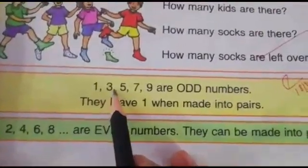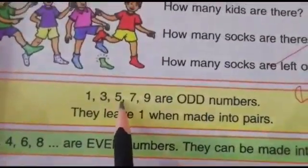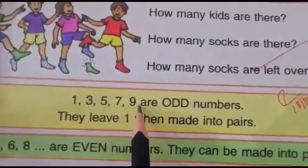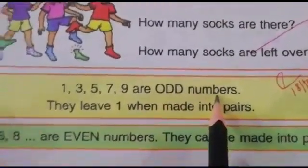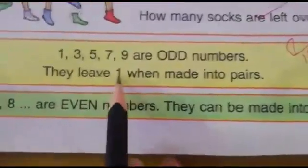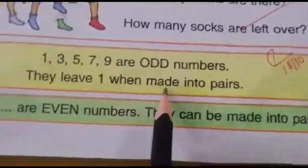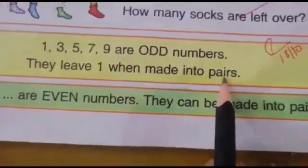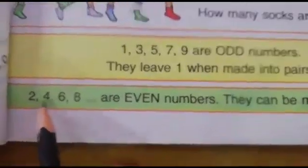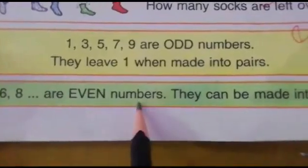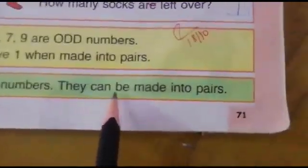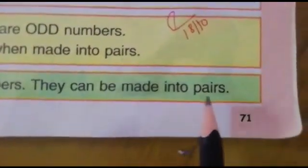Now read it with me. One, three, five, seven, nine are odd numbers. They leave one when made into pairs. Two, four, six, eight are even numbers. They can be made into pairs.